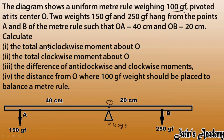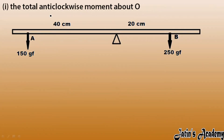We have to calculate: the total anti-clockwise moment about O, the total clockwise moment about O, the difference between them, and the distance from O where a 100 gram force weight should be placed to balance the meter rule. First, let's find the total anti-clockwise moment — 150 gram force is creating the anti-clockwise moment.